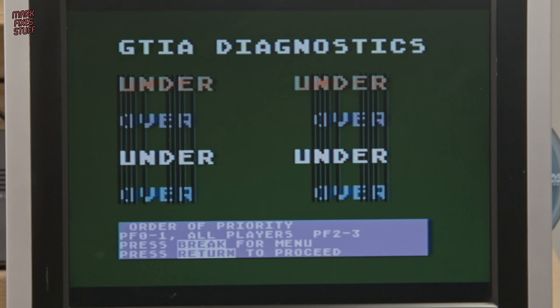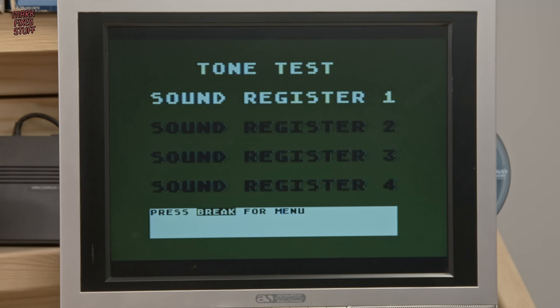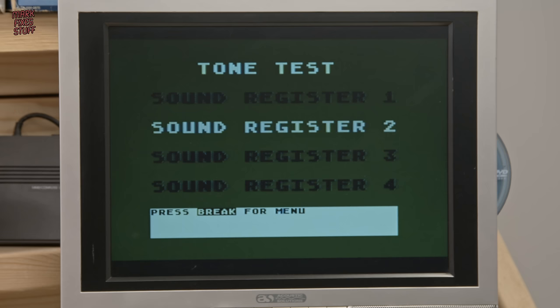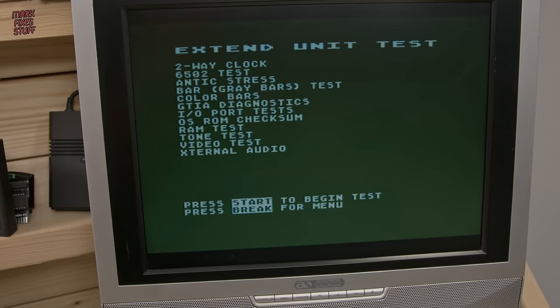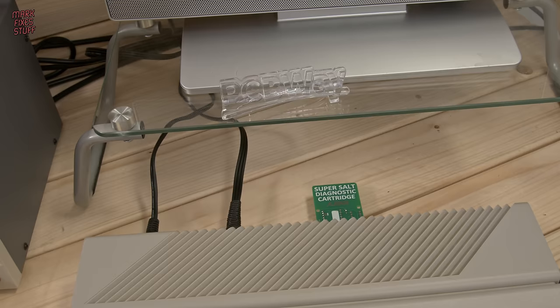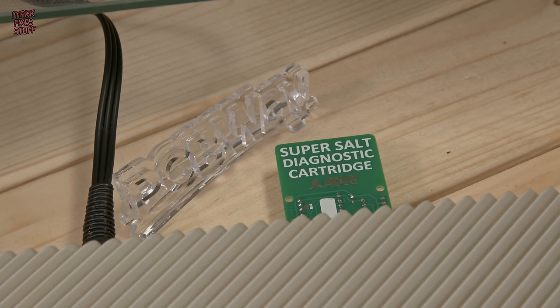You can test your GTIA chip, which is jolly important for games because it determines where your character goes on the screen. And of course, you can check the sound produced by your Atari. There's also a keyboard test, a ROM test, a RAM test, a color bar test and a greyscale bar test. It's pretty handy.